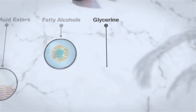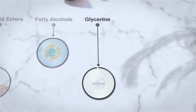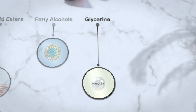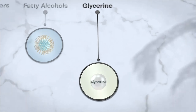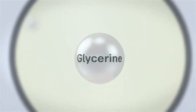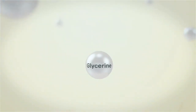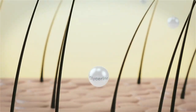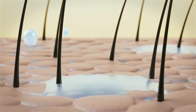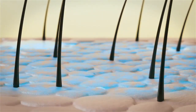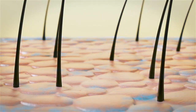Glycerin is another palm-based oleochemical that is common and cost effective. You can easily identify it on the labels of most cosmetic and personal care products. Since water is attracted to glycerin, it is conventionally added as a moisturizer to absorb more moisture to our skin.